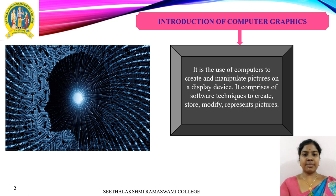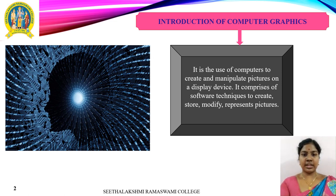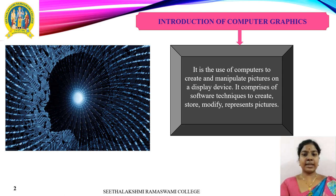A computer is an information processing machine. Users need to communicate with the computer, and computer graphics is one of the most effective and commonly used ways of communication with the user. It displays information in the form of graphical objects such as pictures, charts, diagrams, and graphs. Graphical objects convey more information in less time and in easily understandable formats. In computer graphics, pictures or graphic objects are presented as a collection of discrete pixels.